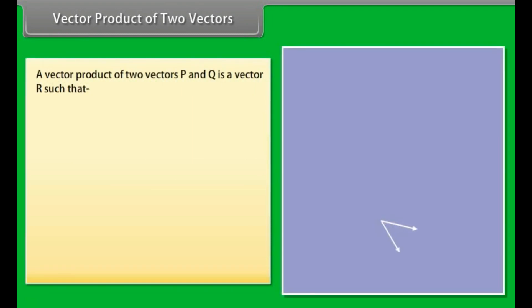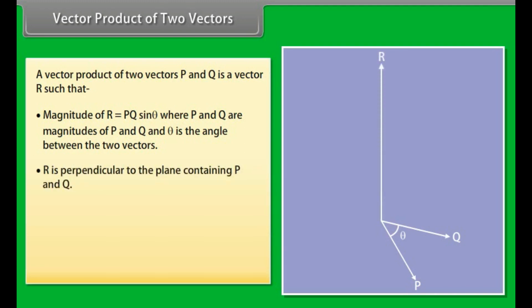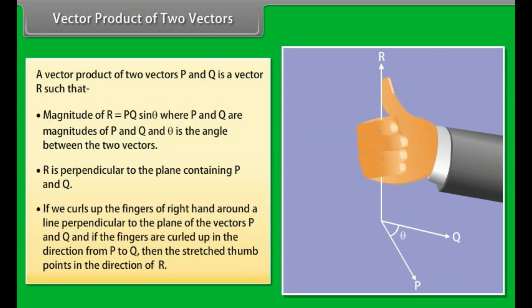The vector product of two vectors p and q is a vector r such that the magnitude of r equals p·q·sinθ, where p and q are the magnitudes and θ is the angle between the two vectors. r is perpendicular to the plane containing p and q. Using the right-hand rule, if fingers curl from p to q, the stretched thumb points in the direction of r.